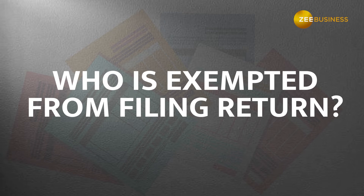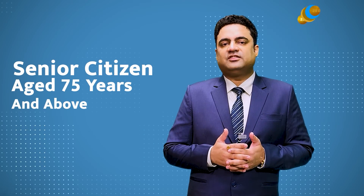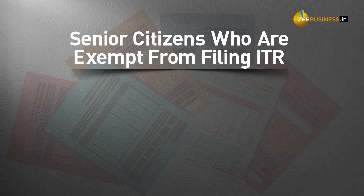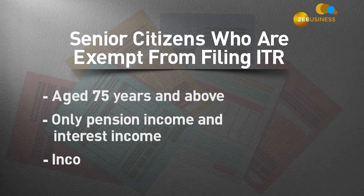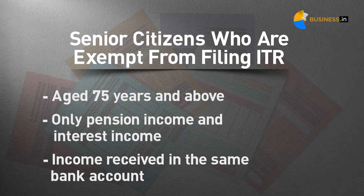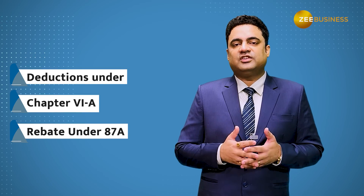Now let's talk about senior citizens who are exempt from filing income tax returns. As per Section 194 of the Income Tax Act, senior citizens aged 75 years and above are exempted from filing income tax returns if they fulfil certain conditions. The senior citizen should be 75 years or above and a resident in the previous year, and should only have pension income and interest income, both received in the same bank account. They can be exempt by submitting a declaration to the specified bank, which will then be responsible for TDS deduction after considering deductions under Chapter 6A and rebate under 87A. Once the bank deducts tax, they will not be required to file income tax returns.